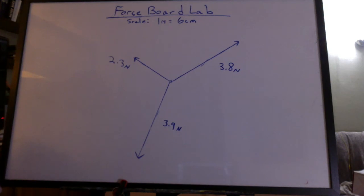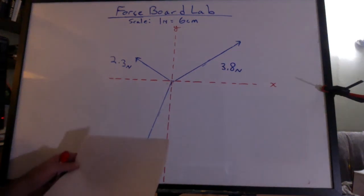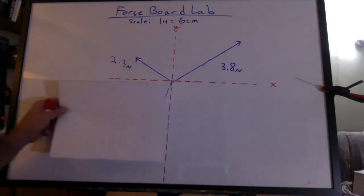Now I have all three force vectors drawn out to scale, tail to tail. I put in an x-axis and the y-axis. I can always check to make sure they're perpendicular with a sheet of paper. Nice and square.